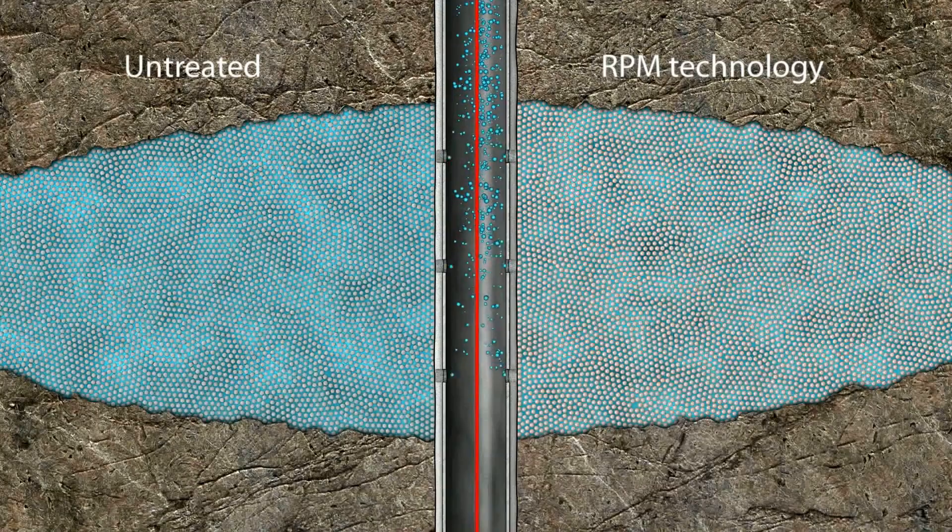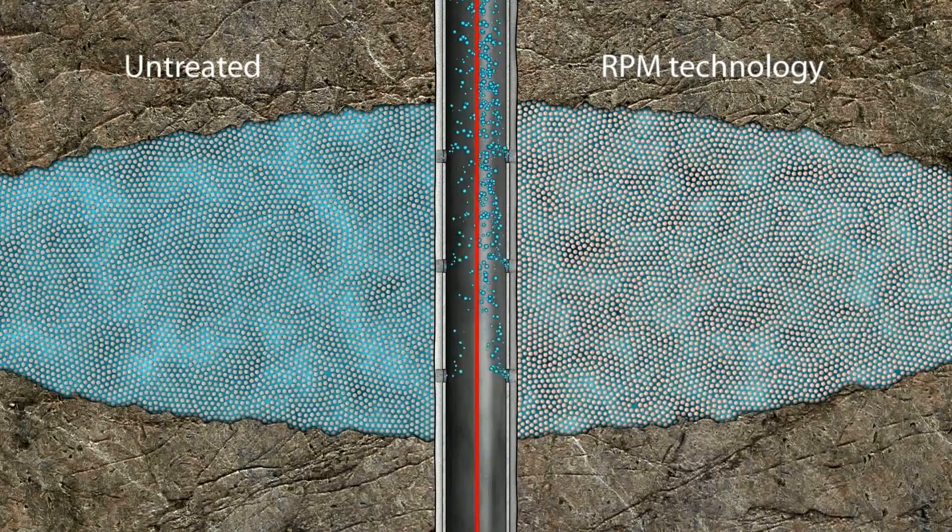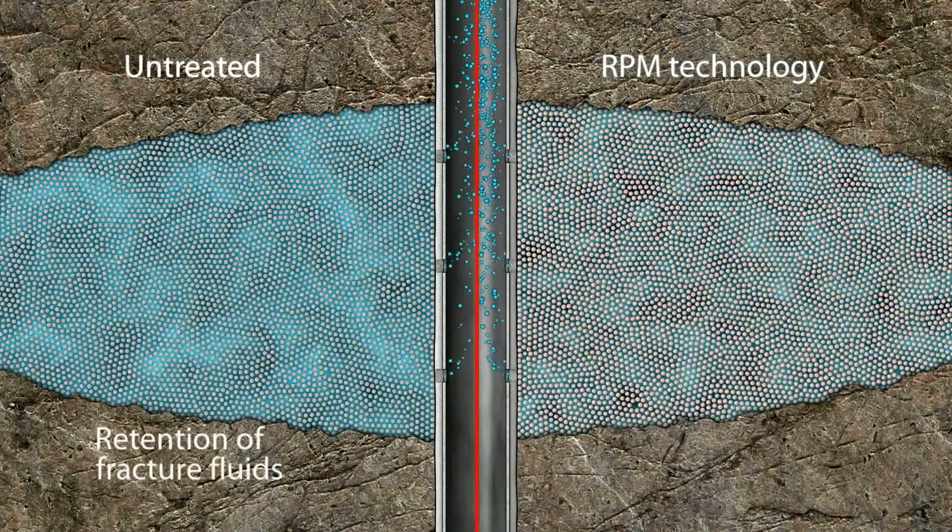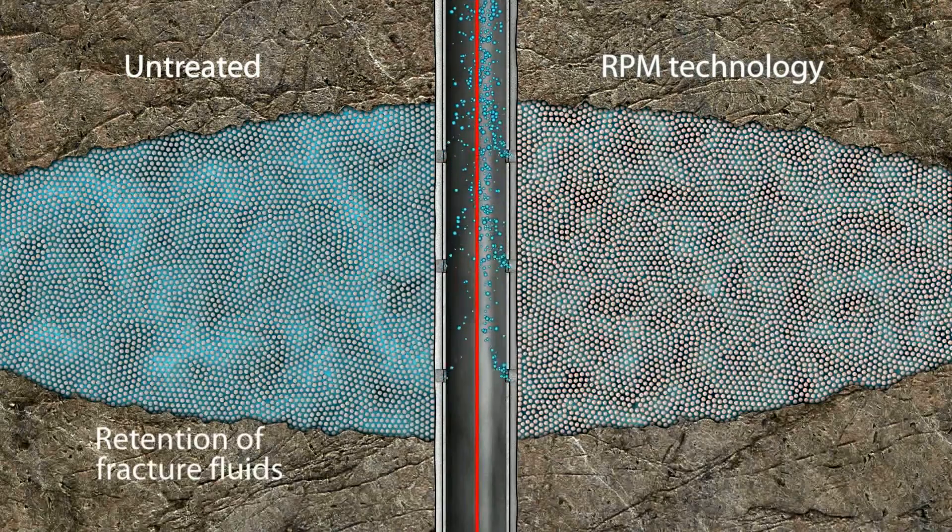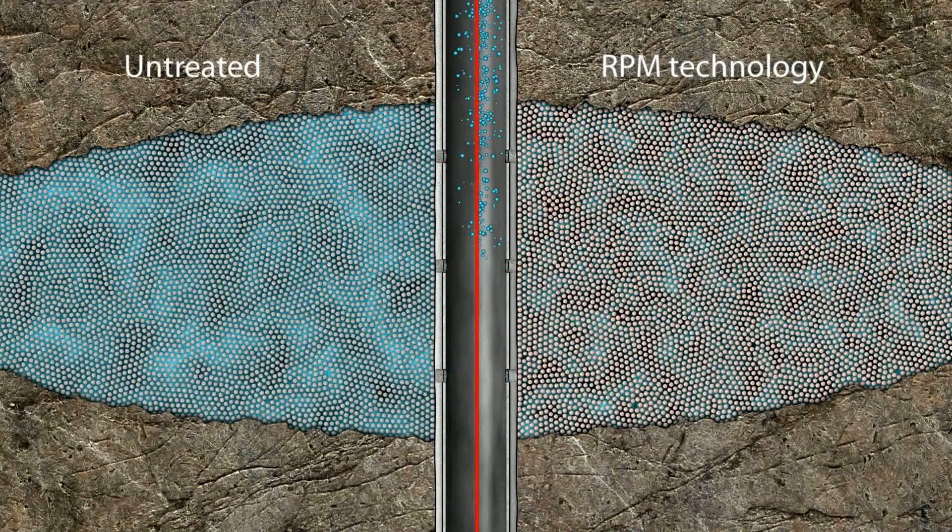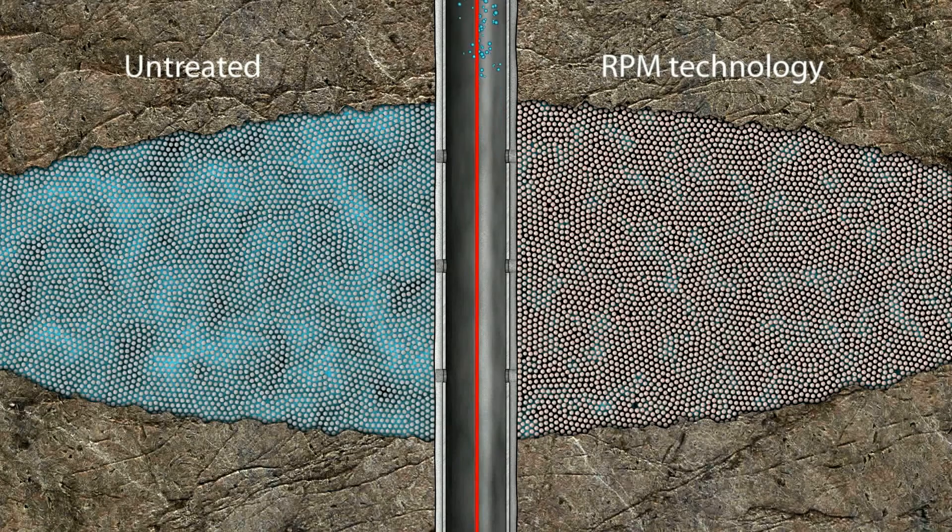the strong water-wettability of untreated proppant and capillary forces can result in the retention of water-based fracture fluids. The capillary forces created by untreated proppants draw fracture fluids up into the propped fracture, causing it to become trapped. RPM Technology eliminates these capillary forces, which enhances fracture cleanup by reducing the retention of fracture fluids.